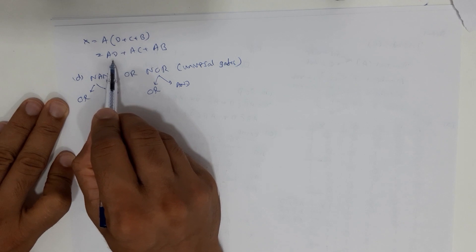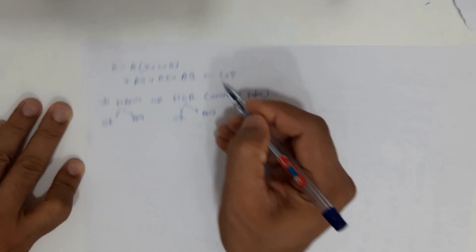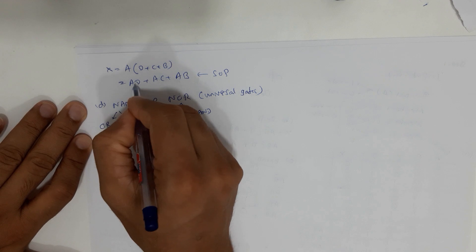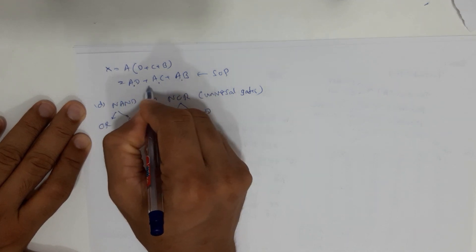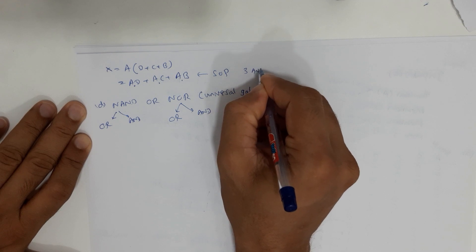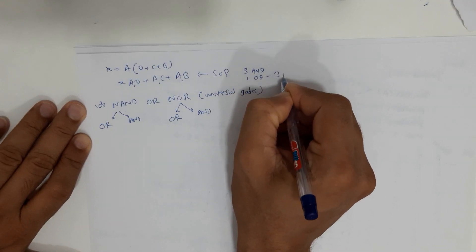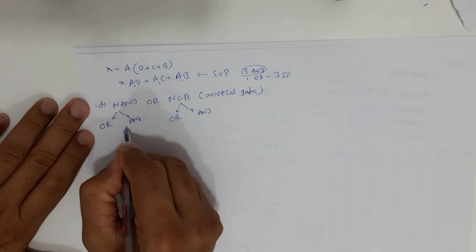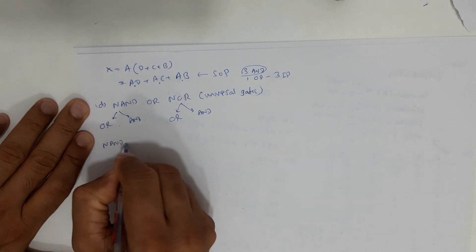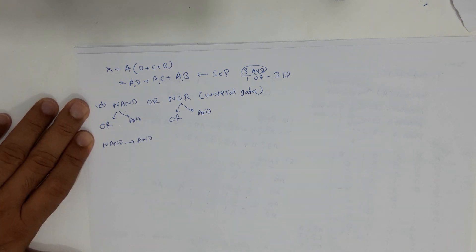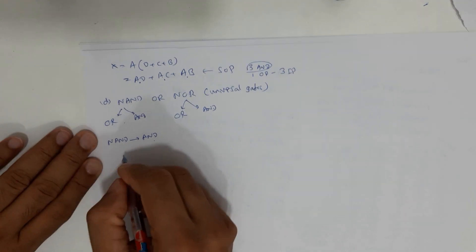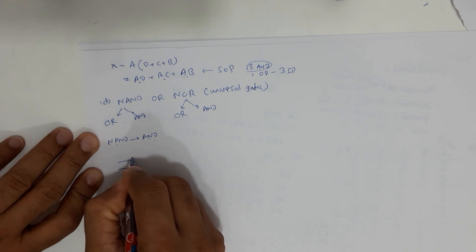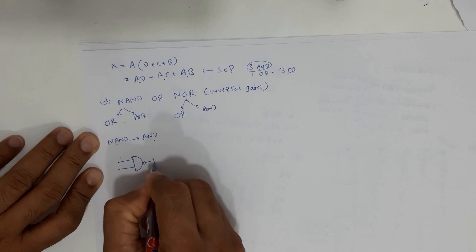Since we have a SOP (Sum of Products) expression, we need three AND gates and one three-input OR gate. Because I need AND gates, I'll use NAND as my universal gate — it's easier to make an AND from NAND. From a NAND gate, we get an AND gate by connecting a NOT gate to the output side.